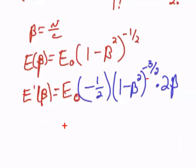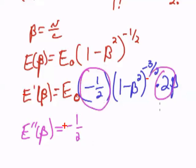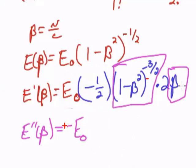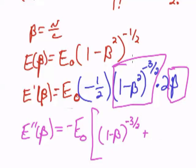Now we'll do the second derivative, E double prime of beta equals negative 1 half, well it's actually negative 1 half times 2, so we'll just have negative, I'll put in our constant E sub 0 times, now we'll use the product rule, derivative of this times this is equal to 1 minus beta to the negative 3 halves.